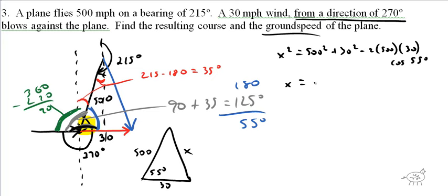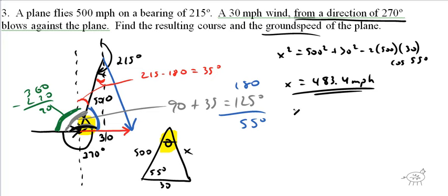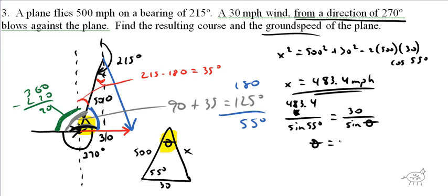Solving that, we get x equals 483.4 miles per hour. Now let's find the resulting course. The wind is pushing the plane to the right, so I'm looking for theta — how much the course is changing. Now that I have x, I use law of sines: 483.4 over sine of 55 degrees equals 30 over sine of theta. Cross-multiplying and taking the inverse sine, theta equals 2.9 degrees.